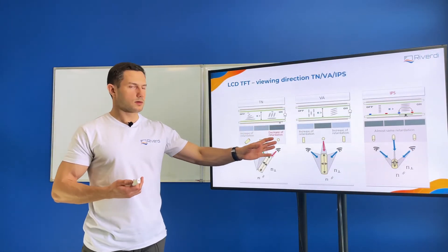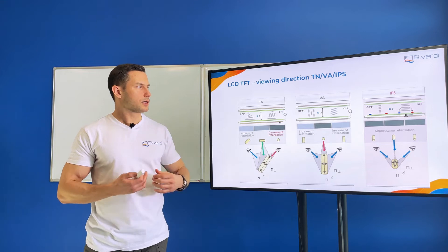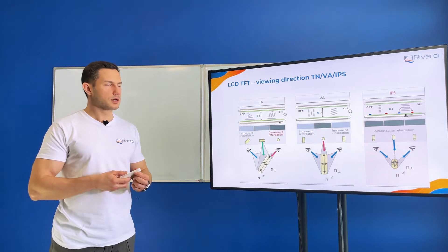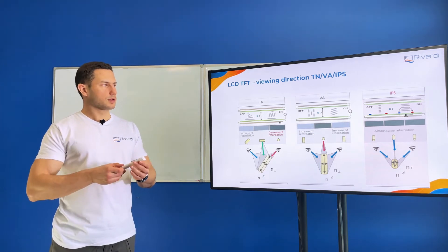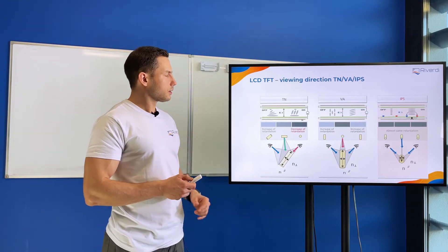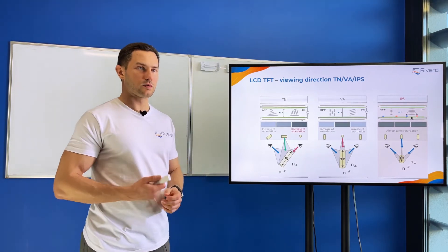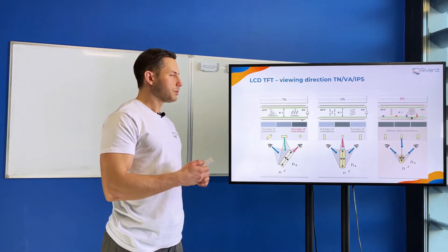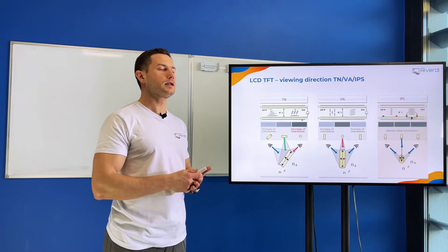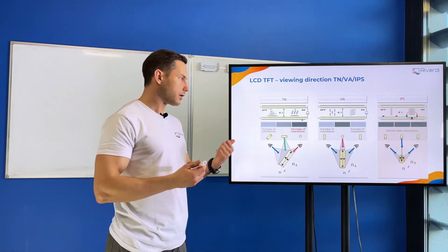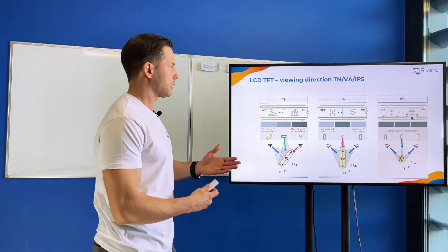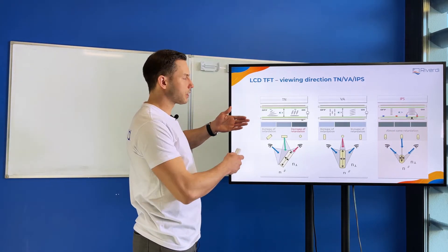And I can tell you that all TVs nowadays are IPS or VA, all the tablets, all the mobile phones, because you can turn them around and see the image clear from all sides. But TN technology is still widely used for monitor applications because monitors are usually in front of you, and most of the time you look at it straight or from up or left or right side, but you very rarely look at the monitor from the bottom side.